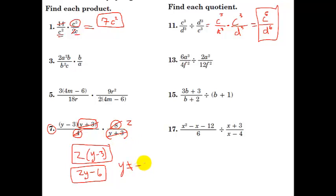We divided by y plus 3, so y should not equal the opposite of that, which is negative 3. I missed some excluded values up here. C cannot equal 0 in this one because it's in the denominator. And over here both C and D cannot equal 0 because they are both in the denominators.